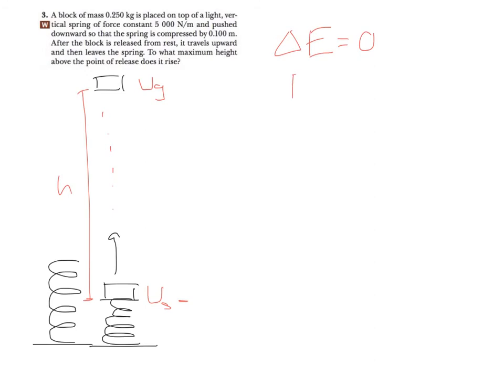Alright, so that means that the final energy and the initial energy are equal. The final energy is the gravitational potential energy. The initial energy is the elastic potential energy. Alright, so that means that if it has, like, 50 joules of elastic potential energy at the bottom, at the moment that it's released, then that's how much gravitational potential energy it's going to have when it reaches its maximum height.